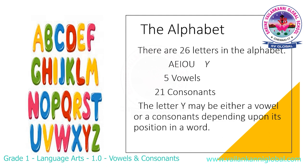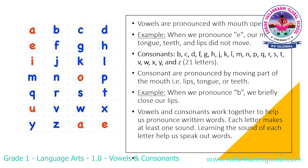Vowels are pronounced with an open mouth. For example, when we pronounce E, our mouth, tongue, teeth, and lips do not move. Consonants include B, C, D, F, G, H, J, K, L, M, N, P, Q...